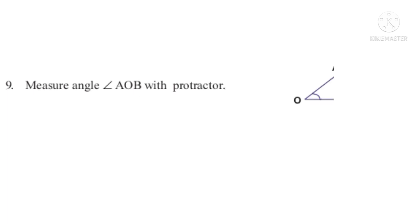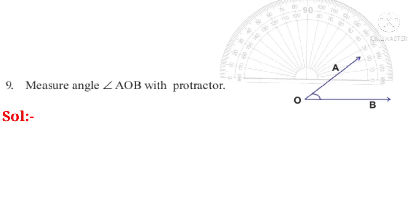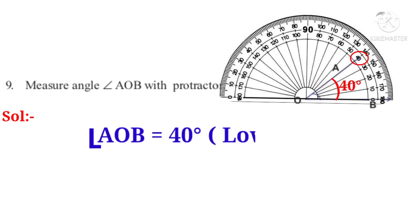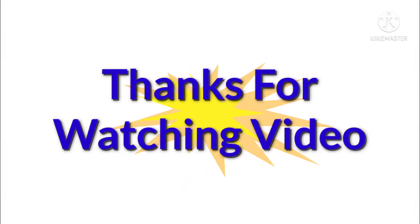Now let us do the ninth problem. Measure and write angle AOB with the help of a protractor. Solution. Put the base of the protractor on the ray OB and measure the angle in the anti-clockwise direction. The ray OA is showing 40 degrees on the protractor. So angle AOB or angle BOA is equal to 40 degrees. Thanks for watching the video.